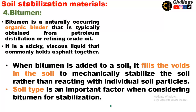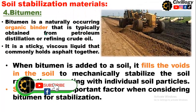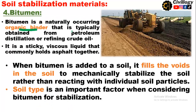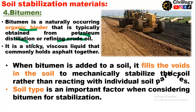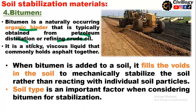The fourth material for soil stabilization is bitumen. Bitumen is a naturally occurring organic binder typically obtained from petroleum distillation or refining of crude oil. It is a sticky, viscous liquid that commonly holds asphalt together. When bitumen is added to a soil, it fills the voids in the soil to mechanically stabilize it, rather than reacting with individual soil particles. Contrary to lime, calciment, and cement — which chemically react with soil particles — bitumen acts as a binder only.